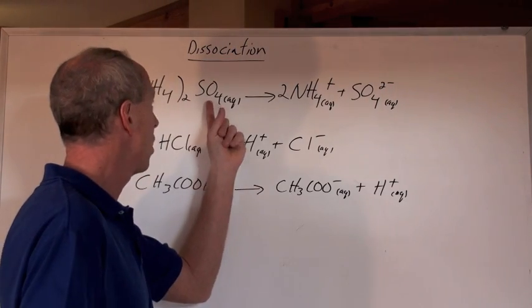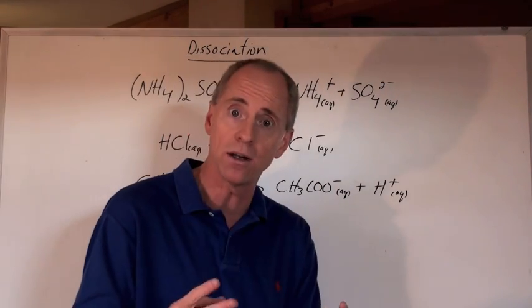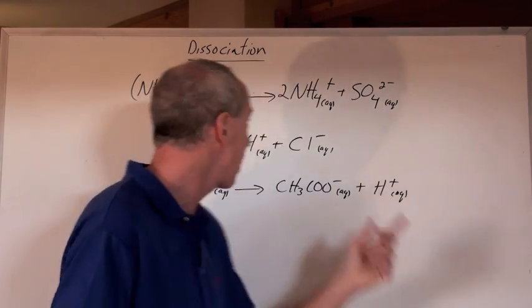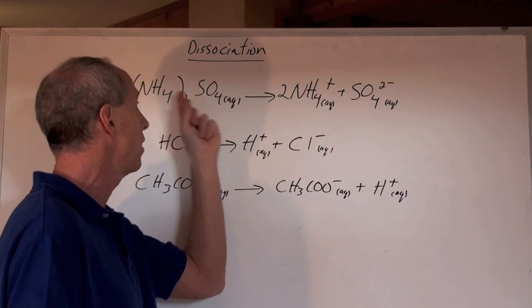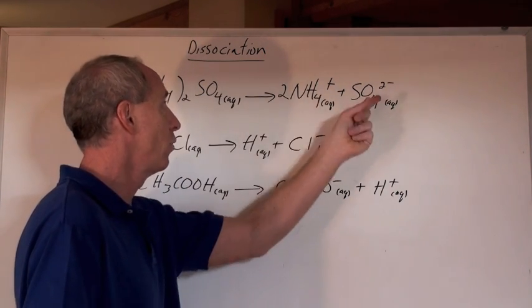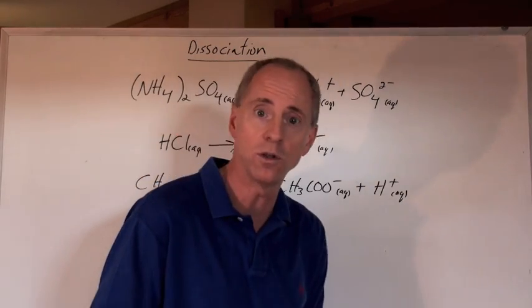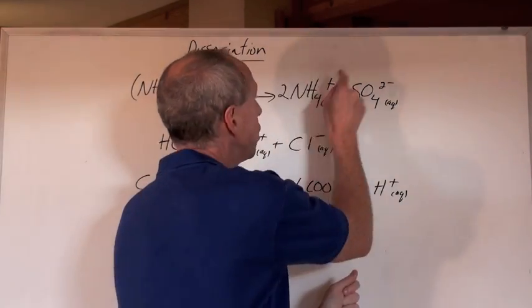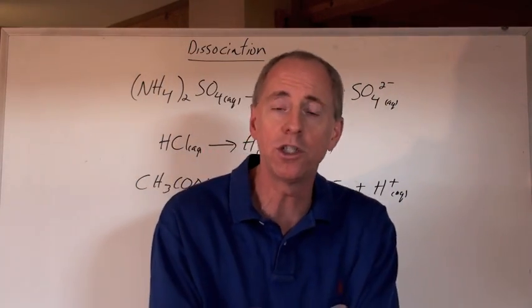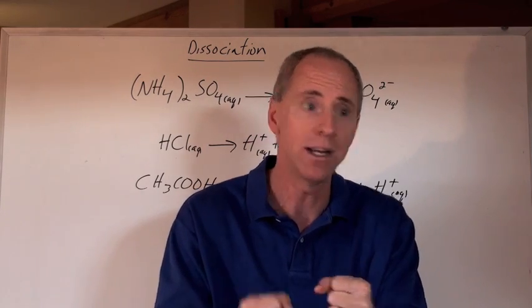So you take that compound and you break it down into the two ions, and then balance the reaction for how many of those cations and anions that you have. So there's the two ammonium ions plus the sulfate, SO4-2. Charged particles, and when they go into solution, and you try to run an electrical current through that solution,